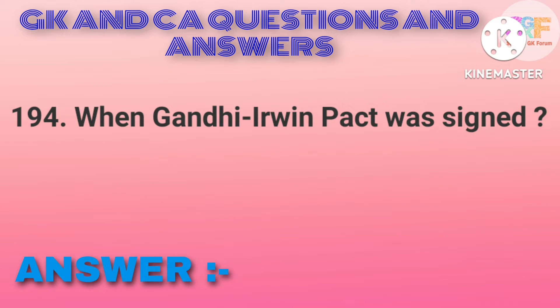When was the Gandhi-Irwin Pact signed? Option A: 1931.